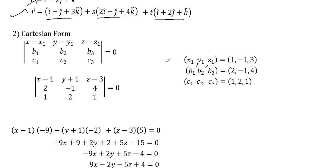So x1, y1, z1 are 1, minus 1, 3. b1, b2, b3 are 2, minus 1, 4. c1, c2, c3 are 1, 2, 1 equal to 0.